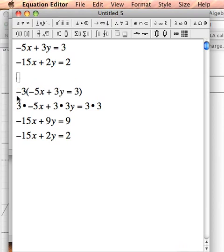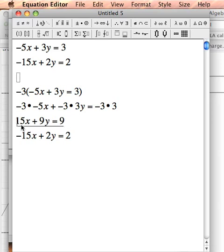Well, I'll just add a negative right here. I'll just change all these to negative. And see if that changes anything. You see, negative 3 times negative 5x, that's positive 15x. Negative 3 times 3y equals negative 9y. And negative 3 times 3 is negative 9.